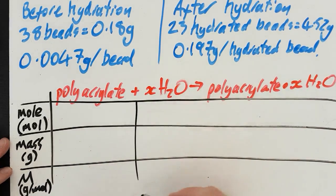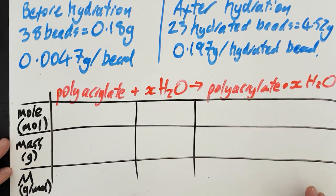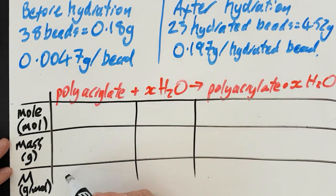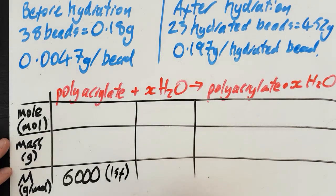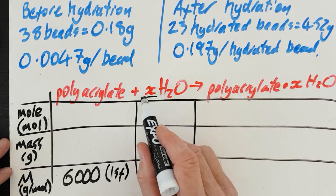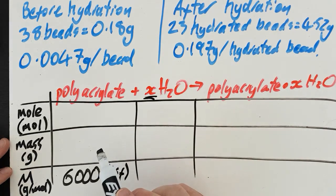On the internet I looked up the average mass of these polyacrylate beads. The molar mass was about 6,000, so only one sig fig because I don't know specifically what those ones were that I bought. Now to work out this X.